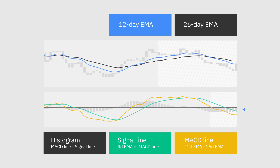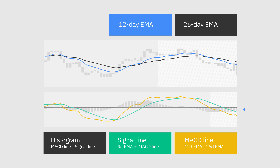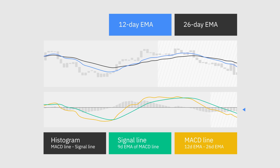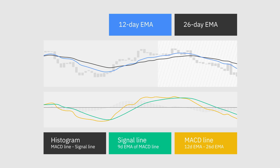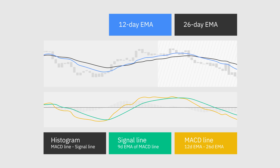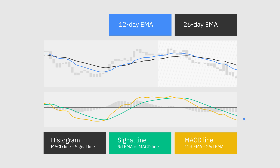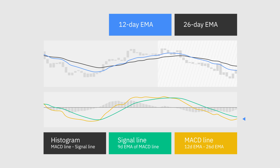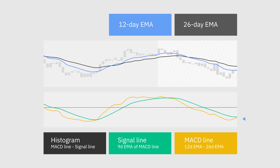That is, a nine-day EMA on daily charts, a nine-hour EMA on hourly charts, and so forth. The MACD histogram is a graphical representation calculated based on the differences between the other two lines. But instead of adding a third moving line, the histogram is made of a bar graph, making it visually easier to read and interpret.